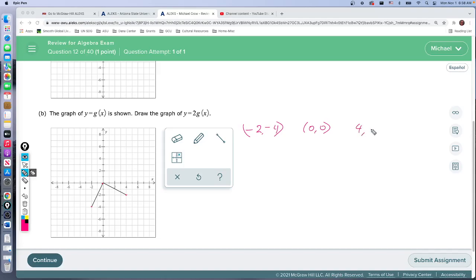And this point is 4, negative 2. This is telling us multiply the y values by 2.